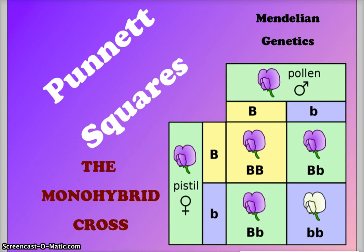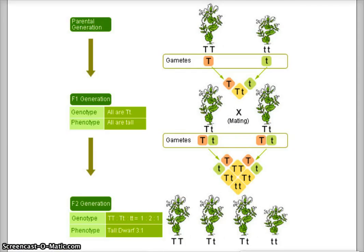Going back to Mendel's work, he had thorough charts but we are looking for a more simplistic way to figure out genetic outcomes. Mendel had the parent generation — the P generation — which crossed two pure parents. We had the tall plant and the short plant, both homozygous: TT crossed with tt. When we cross these two parents we get the F1 generation, filial one, meaning offspring or son or daughter.